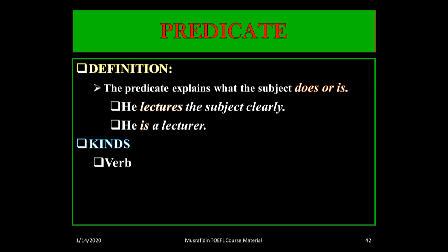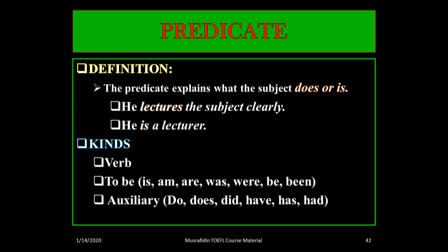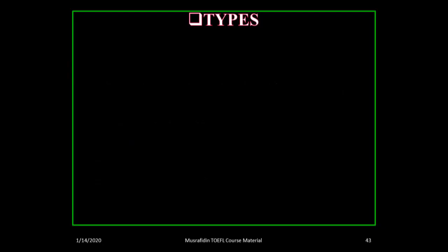All words classified as verbs are termed as predicates — for example: run, type, etc. To be verbs such as is, are, was, were, be, and been are also classified as predicates. Auxiliaries such as do, does, did, have, has, and had are also classified as predicates.